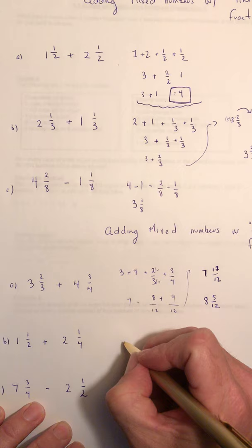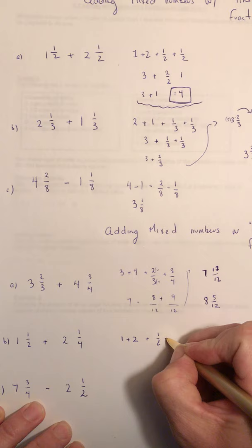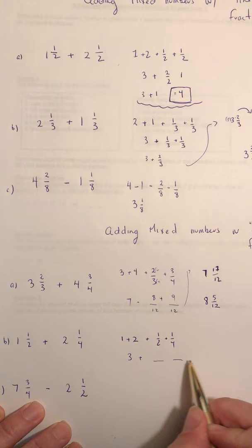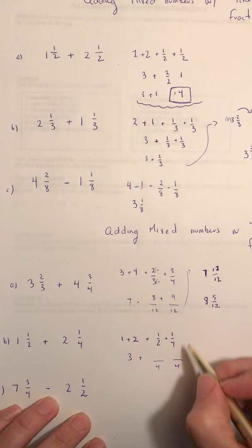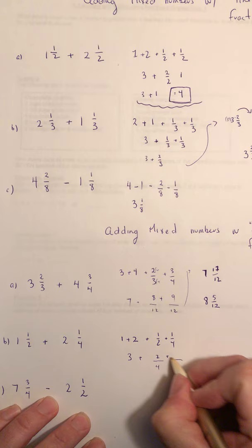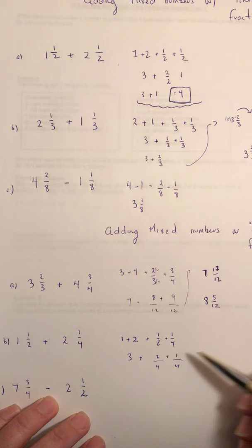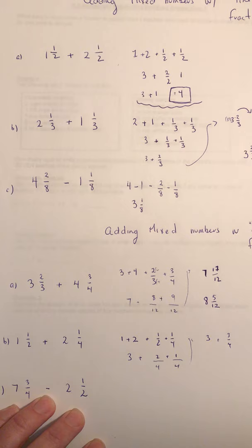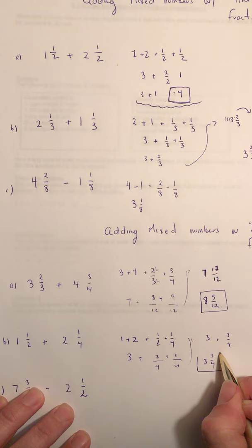Let's do this one. Rewrite: one plus two plus one-half plus one-fourth. One plus two is three. For the fractions, the common denominator is four since two is a factor of four. Multiply one-half by two over two: one times two is two, so two-fourths. One-fourth stays as one-fourth — multiply by one. Two-fourths plus one-fourth is three-fourths. So our answer is three and three-fourths.